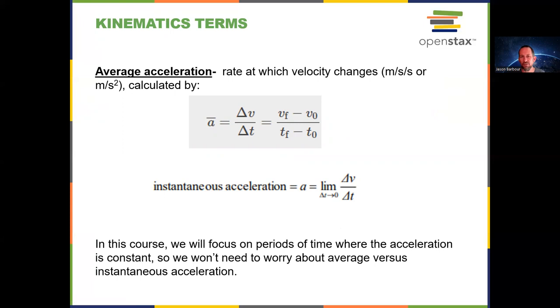One more term, which is average acceleration. So the average acceleration is defined as delta v over delta t. Remember, delta is always final minus initial. And then let's just go ahead and put instantaneous acceleration there, which is similarly using a limit as delta t goes to zero of delta v over delta t. But really, we don't need to worry about this because in this course, we are going to be looking at time periods where the acceleration is constant. So then there's no difference between average and instantaneous acceleration because we're only looking at constant acceleration time periods. And that's a good place to stop. And then I'll pick up and I'll do another module one video coming up.